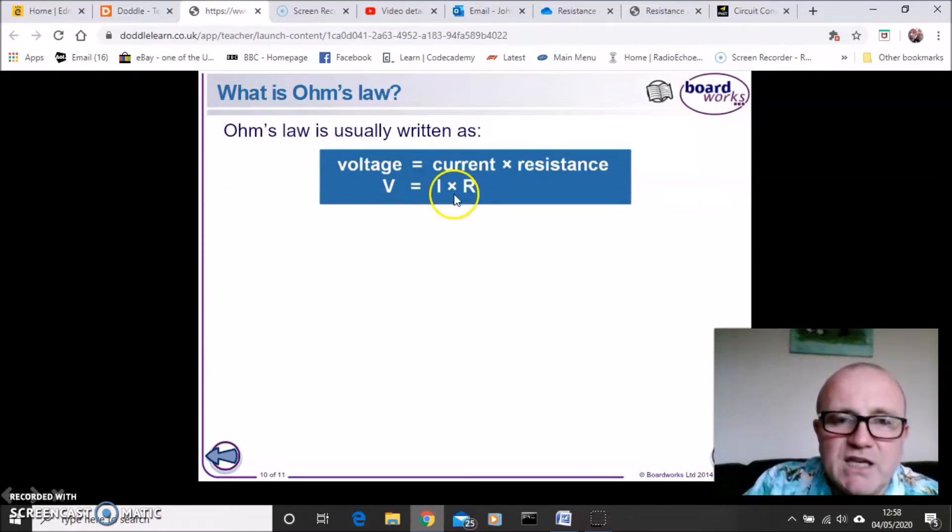Now you will notice the more eagle eyed of you will notice that for some reason we've got the letter I representing current. And some of you may be thinking well why don't we use a C? The reason why we don't use a C is because C is used for something else. So we represent current with the letter I.